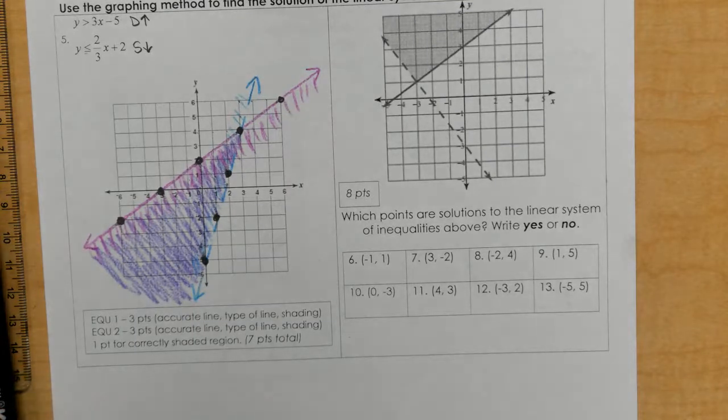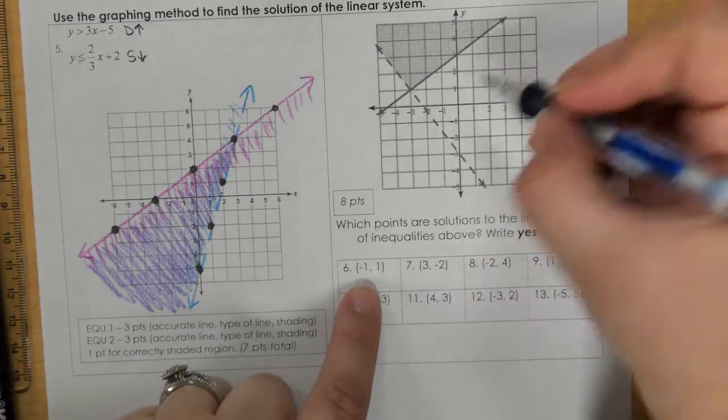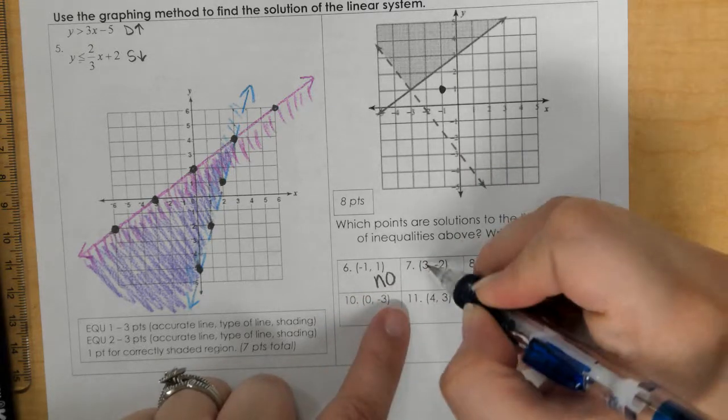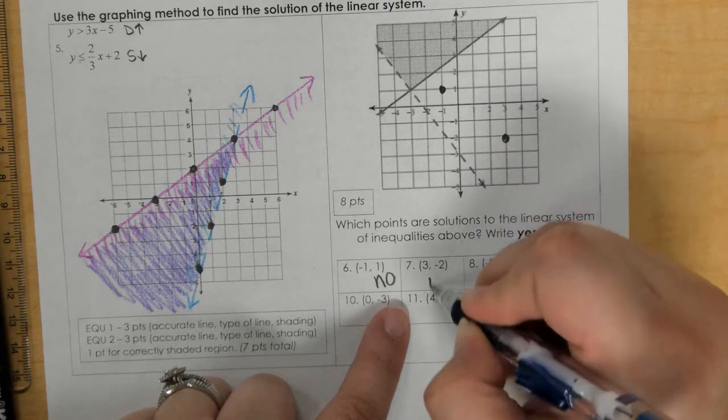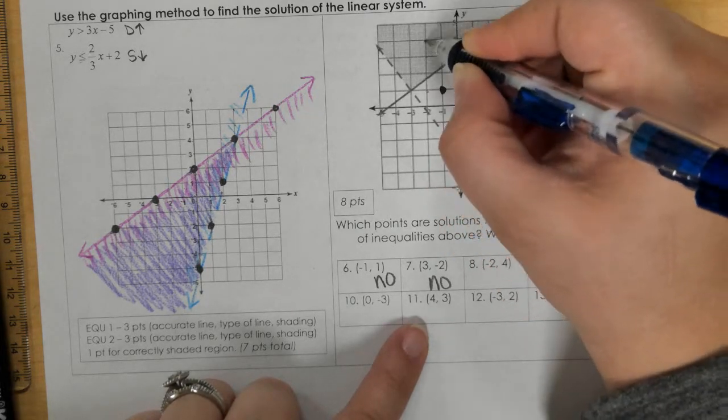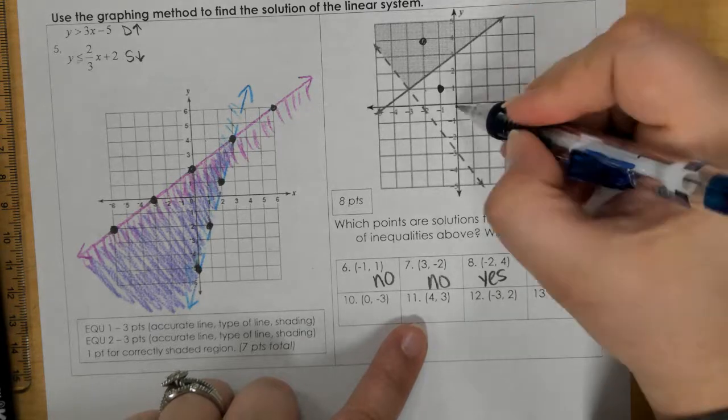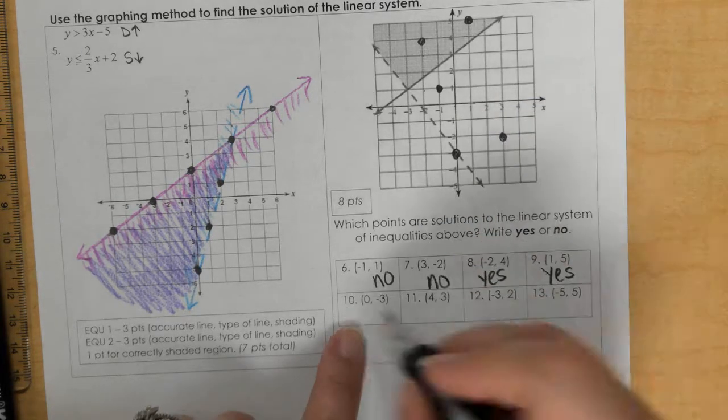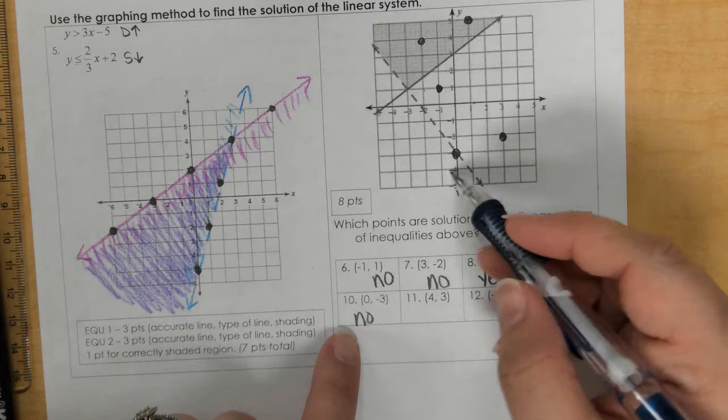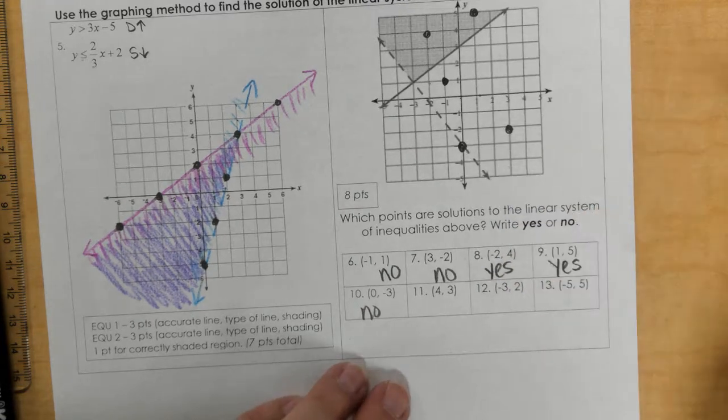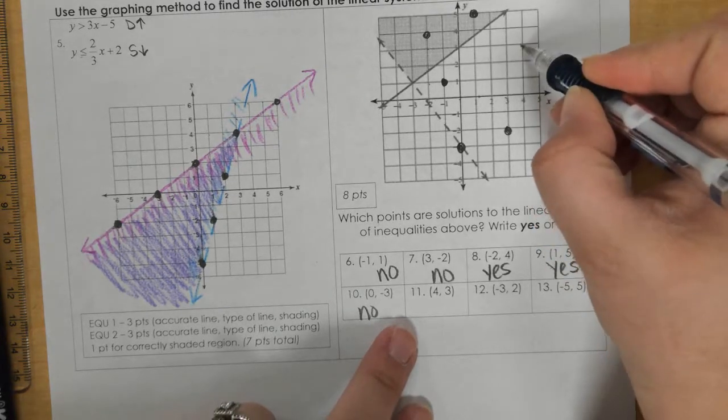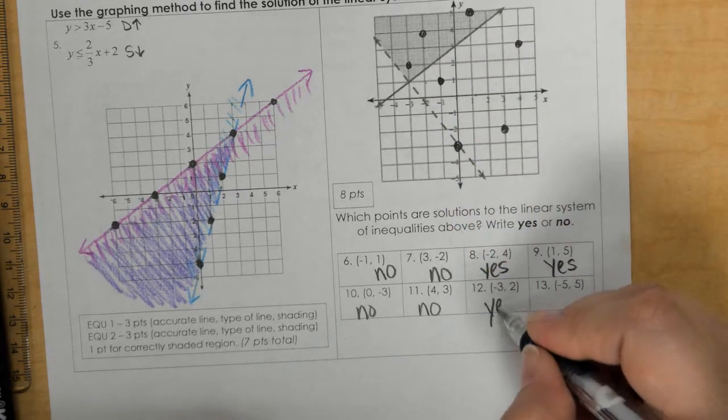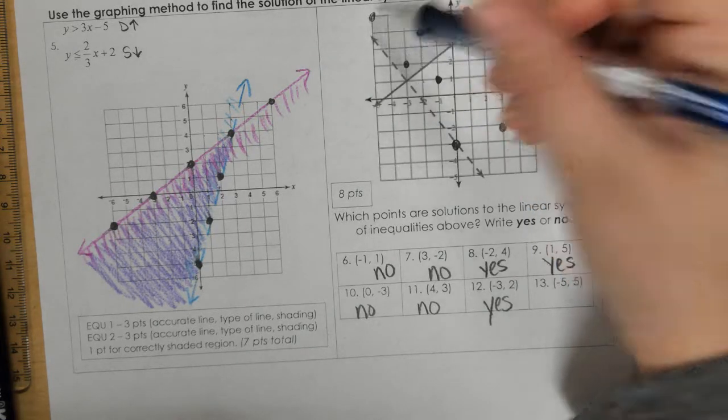Lastly, for numbers 6 through 13, you're graphing the points to see if they land in the shaded area or the white area. White area is no. (3, -2), no. (-2, 4), yes. (1, 5), yes, it's in the shaded area. (0, -3), no, because it's a dashed line and in the white area. It's never an answer if it's on the dashed line. (4, 3), no. (-3, 2), yes. (-5, 5), yes.